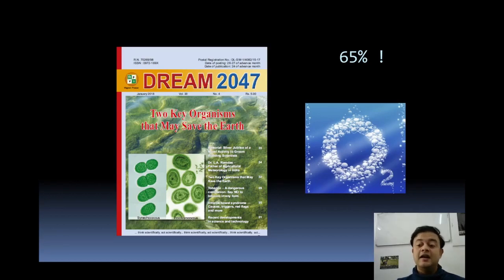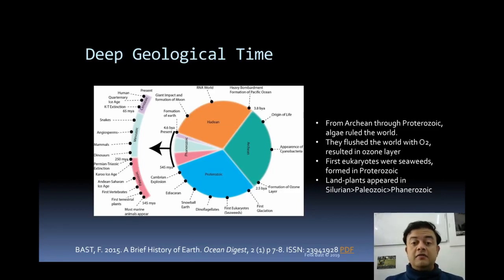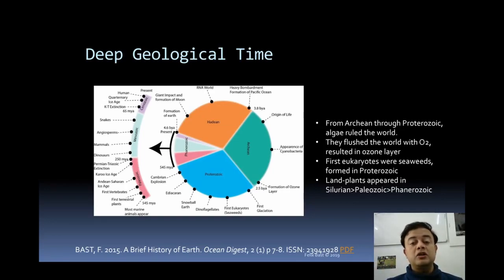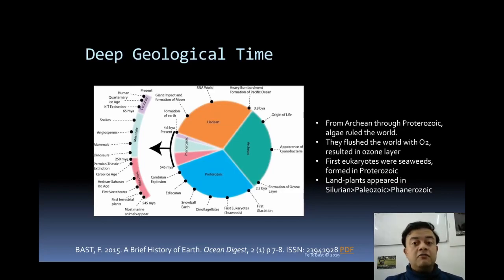Now you realize the importance of picoplankton. Looking at the geological timescale, cyanobacteria originated in the Archaean eon — from the origin of life — and started photosynthesizing, flushing the atmosphere with much-needed oxygen. This resulted in the formation of the ozone layer. Through the Archaean and Proterozoic, algae — the cyanobacteria — ruled the world and produced the ozone layer. Algae are the first eukaryotes.